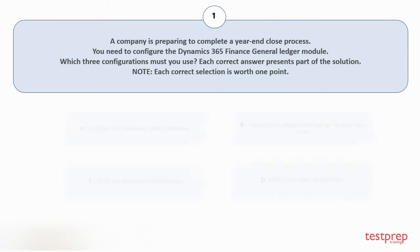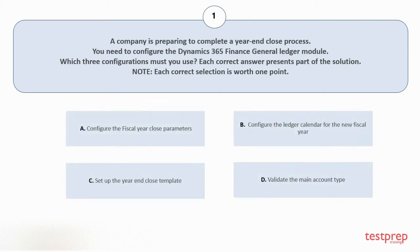Your options are: A. Configure the fiscal year close parameters. B. Configure the ledger calendar for the new fiscal year. C. Set up the year-end close template. D. Validate the main account type.